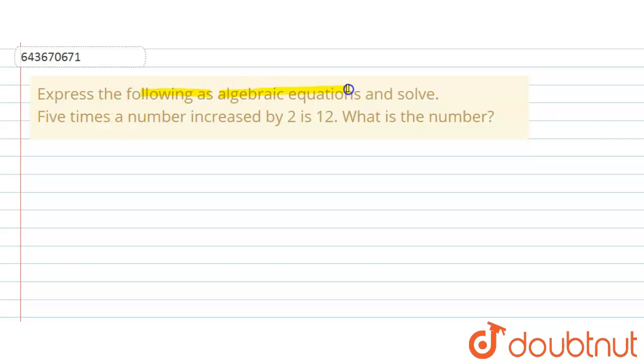Express the following as algebraic equations and solve. Given: five times a number increased by two is 12. What is the number?